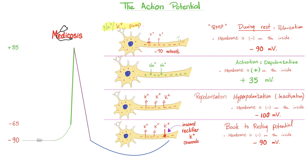During rest, potassium is leaving. Upon depolarization, sodium is entering. Then during repolarization, you stop the sodium entry and start potassium efflux. Potassium will go out and you will overshoot — that's the hyperpolarization. The inward rectified potassium channels will bring some potassium back in, and now you are back at baseline.